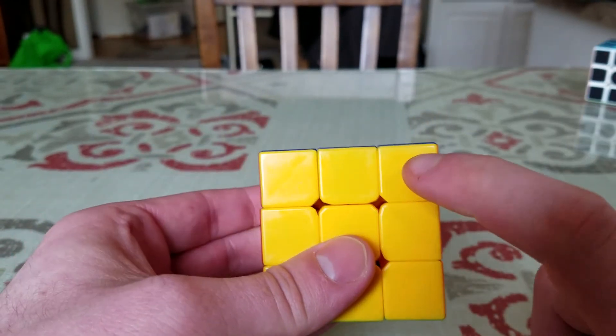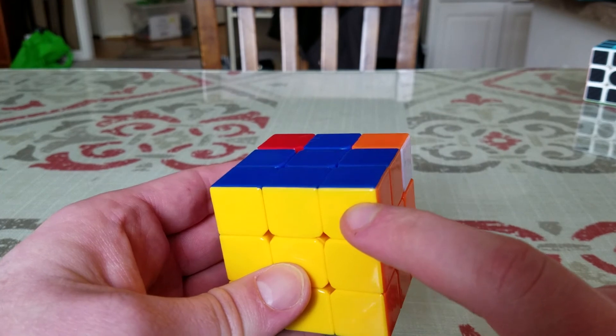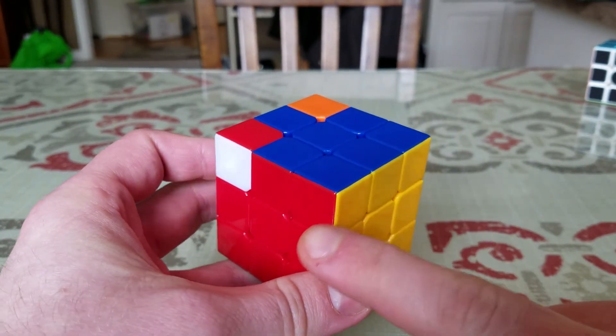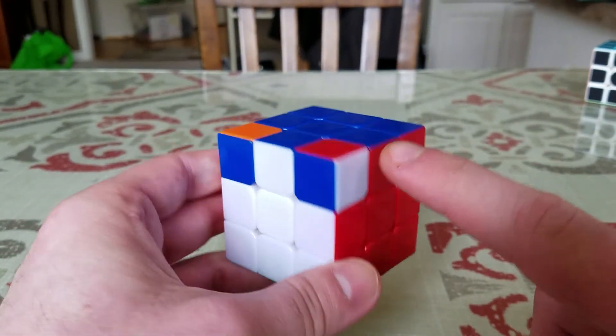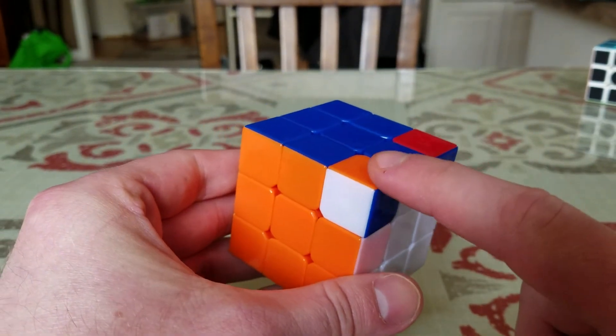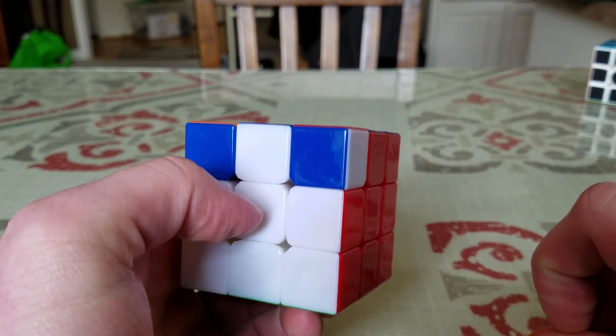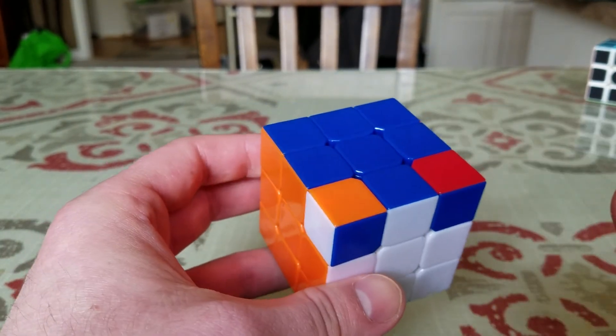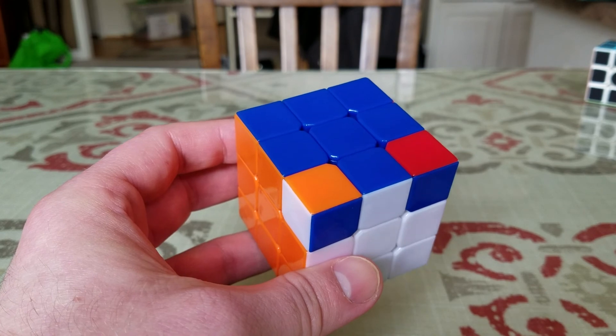And now if we check, remember this was the one that was already in the correct position. Now you'll notice that the red, yellow, and blue one is in the right position. So is the red, white, and blue one, as well as the blue, orange, and white. So now all the corners are in the correct position. That's all it takes for the sixth step.